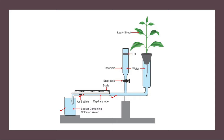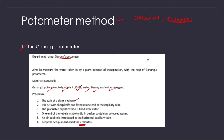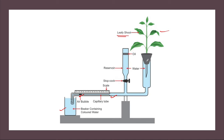We have the leafy shoot — it's a living twig with a shoot placed in the capillary tube. After some time, in the observation, you see the air bubble is moving. This is often given in practical records for 20 marks in exams. The air bubble moves because the shoot takes in water and loses water through transpiration.